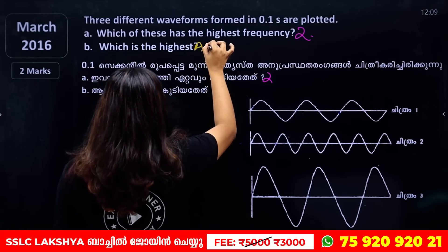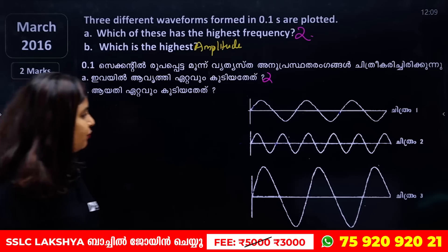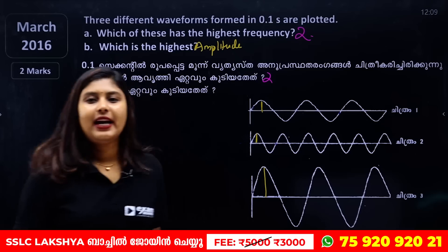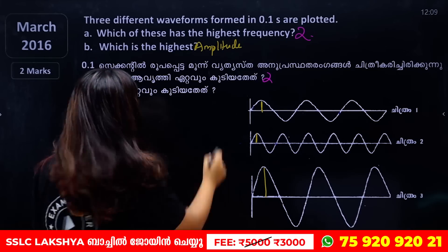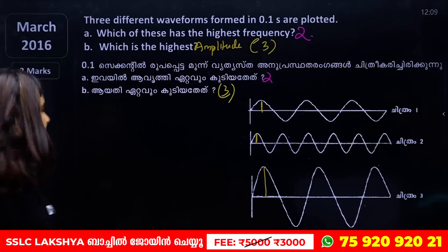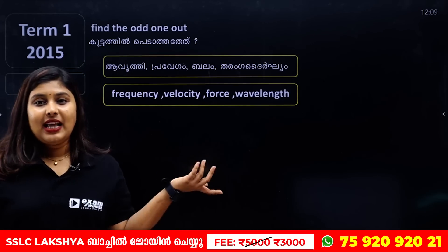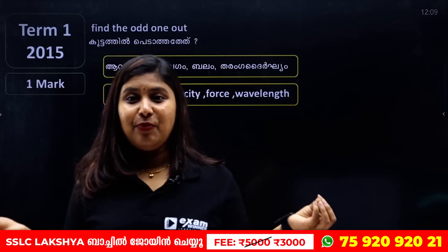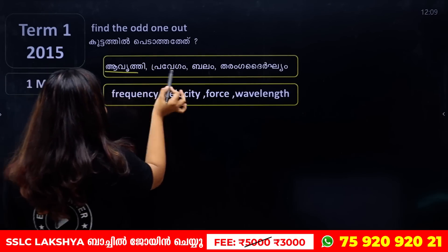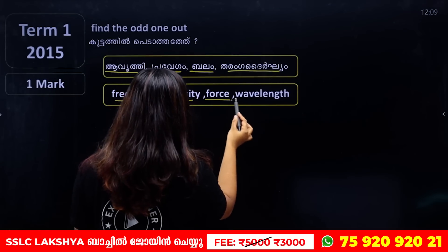Which waveform has the highest amplitude? Looking at the figures — here the amplitude is largest in waveform 3. The waveform with the highest frequency shows more vibrations. Among the options, consider frequency, velocity, force, and wavelength.